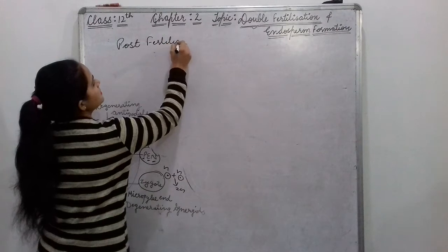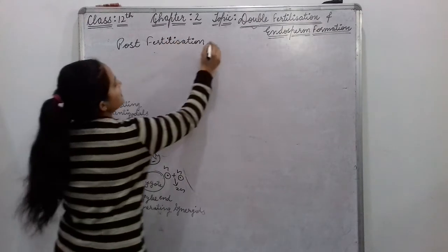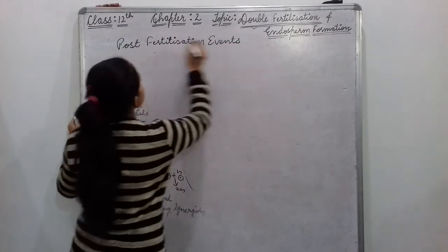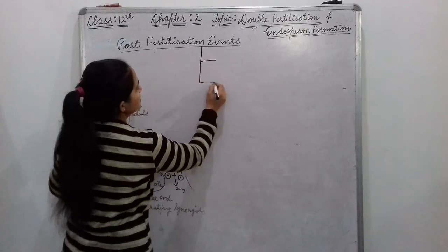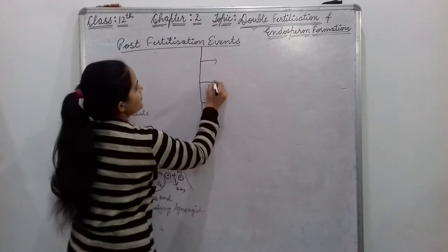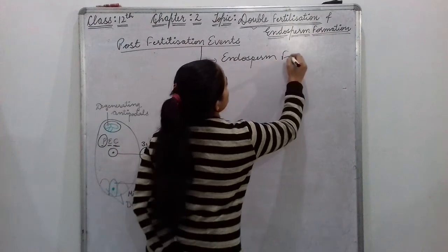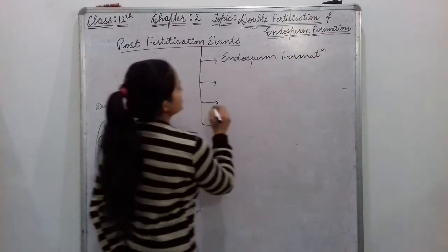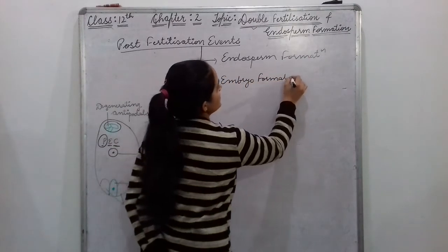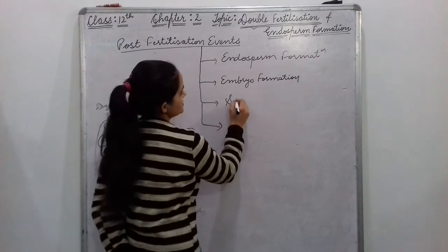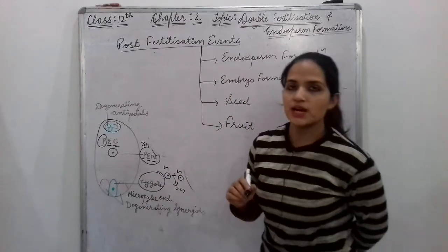Post-fertilization events — post means after fertilization. There are four events in total. First event is endosperm formation. Second one is embryo formation. Third one is seed formation. And fourth is fruit formation.